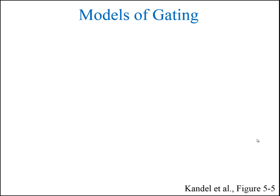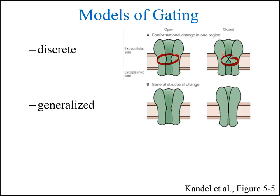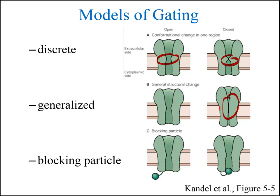There are currently three models of gating that may apply to different types of ion channels. The first model is a discrete change in one particular location of the ion channel. The second model is a generalized change in the pore of the ion channel. The third model involves a blocking particle that swings into place and blocks the pore. You may recognize this as what causes inactivation in voltage-gated sodium channels involved in generating an action potential.